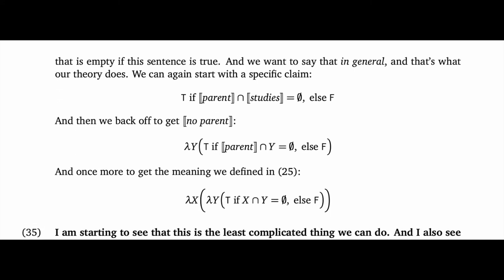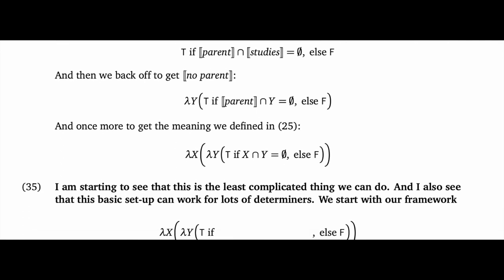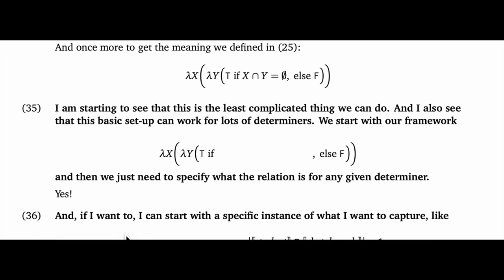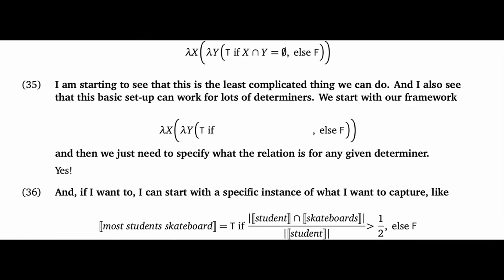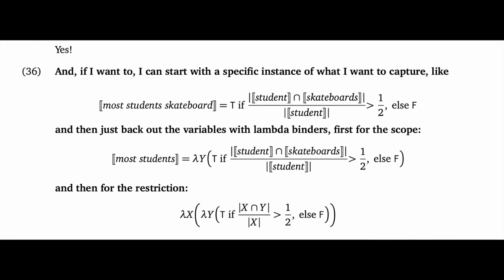At this point, in my imagination at least, the student is ready to become the teacher. So the student says: I'm starting to see that this is the least complicated thing we can do. I also see that this basic setup can work for lots of determiners. We start with our framework and then we just need to specify what the relation is for any given determiner. And I like this as a working strategy. The student continues: and if we want to, I can start with a specific instance like most students skateboard, and then just back out the variables with lambda binders first for the scope and then for the restriction.